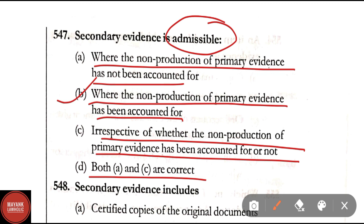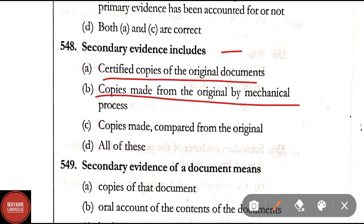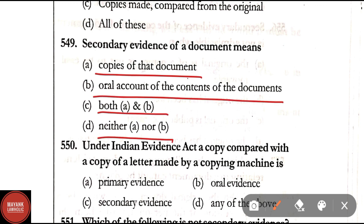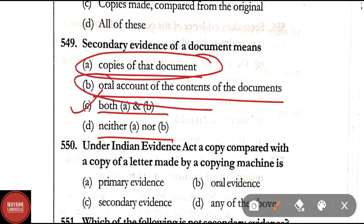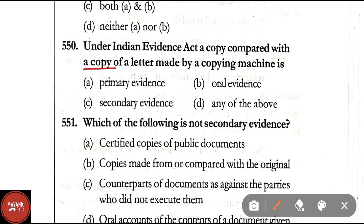Question 548: Secondary evidence includes — certified copies of the original documents, copies made from the original by mechanical process, copies made and compared from the original, or all of these. Correct answer is Option D — all of these. Question 549: Secondary evidence of a document means — copies of that document, oral accounts of the contents of the document, both A and B, or neither. Correct answer is Option C — both A and B. Question 550: Under the Indian Evidence Act, a copy compared with a copy of a letter made by a copying machine is — primary evidence, oral evidence, secondary evidence, or any of the above. Correct answer is Option C — secondary evidence.